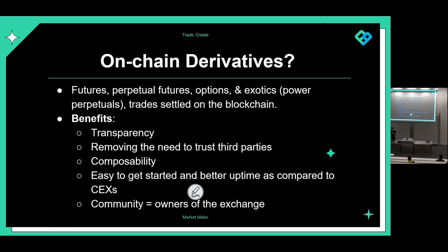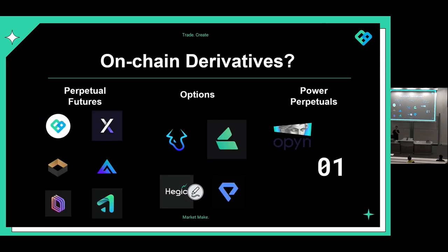Here's a snapshot of the on-chain derivative landscape covering the main projects. On one hand you have perpetual futures, which is the simplest derivative product. With options and power perpetuals the payoff is non-linear, but with perpetual futures the payoff is linear — a one dollar change in the price of a perpetual futures contract leads to an approximate one dollar change in your PnL. With options and power perpetuals, a one dollar change in the underlying means you get a more than one dollar change in your PnL.